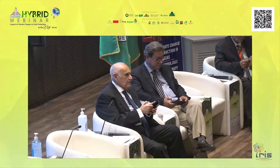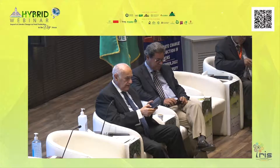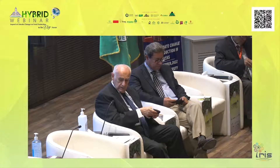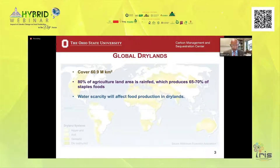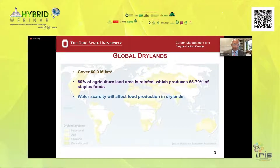Dry lands cover more than 60 million square kilometers. 80% of agriculture land area is rain-fed, which produces 65 to 70% of staple foods. Water scarcity does and will affect food production in dry land, and dry lands are prone to climate change — global warming trends are more than double compared to humid areas. Soil degradation and desertification are serious problems in dry lands, and a large proportion of 2.5 billion poor living on less than $2 per day live in dry land areas.